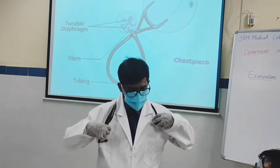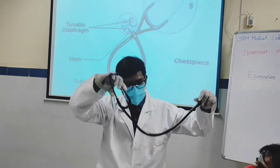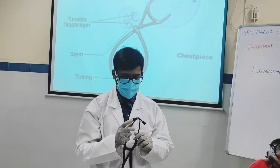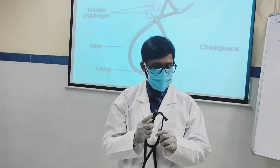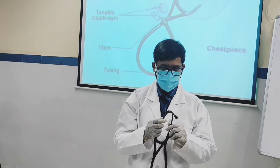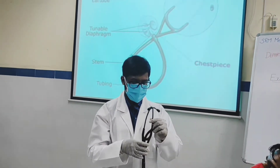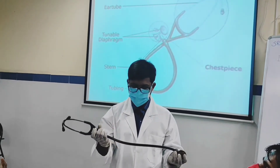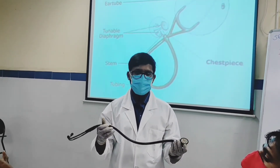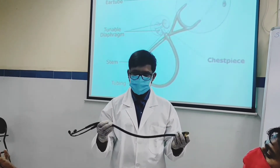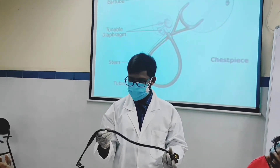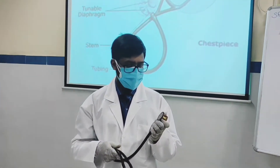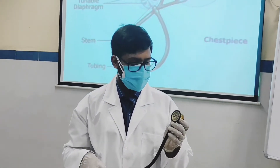Before going into auscultation, an ideal stethoscope should have well-fitting earpieces, a thick long tube of 25 cm length and diameter of 0.325 cm. Diaphragm diameter should be 4 cm and bell diameter of 2.5 cm.